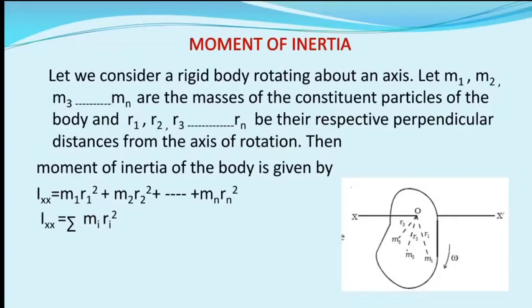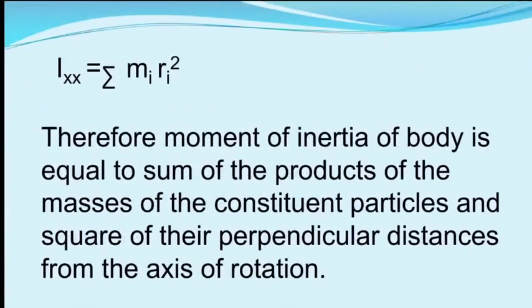Then the moment of inertia of the body about the axis is given by: I = m1·r1² + m2·r2² + ... + mn·rn². We can also write this as I = Σ(i=1 to n) mi·ri². Therefore, the moment of inertia of a body is equal to the sum of the products of the masses of the constituent particles and the square of their perpendicular distances from the axis of rotation.